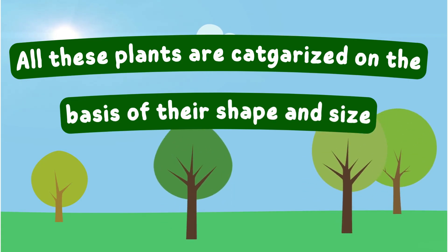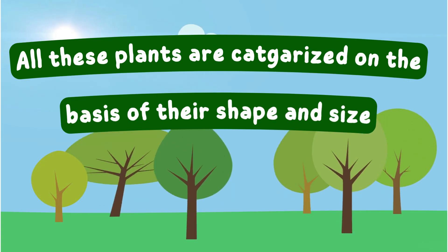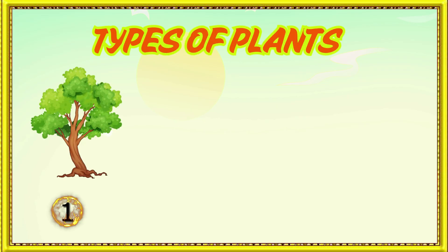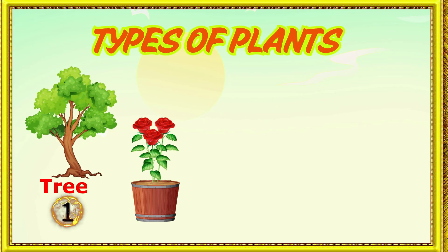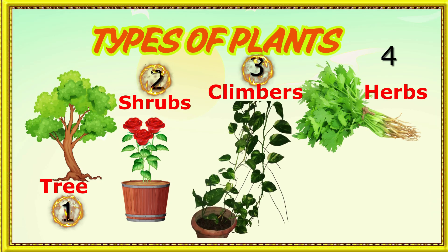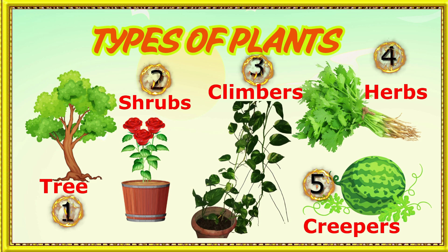Now let's learn the types of plants. Number 1: tree. Number 2: shrubs. Number 3: climbers. Number 4: herbs. Number 5: creepers.